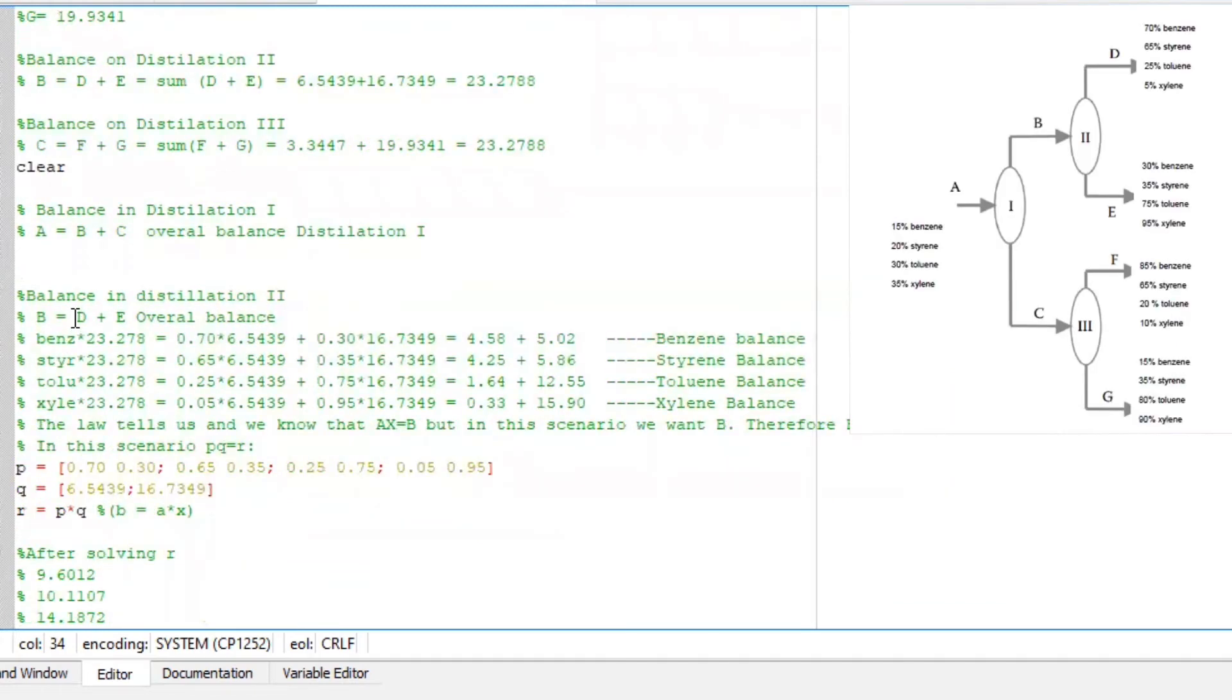B is equals to D and E, overall balance on the second distillation. I nicely represented my compositions for both D and E since I know them and also know the values of D and E streams. The only unknown here on this second distillation is the compositions of B. So let's solve it.